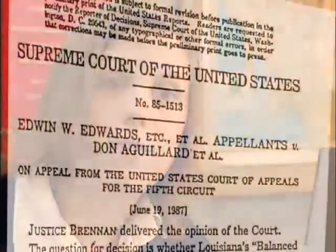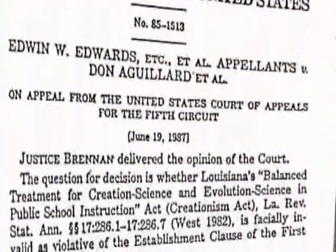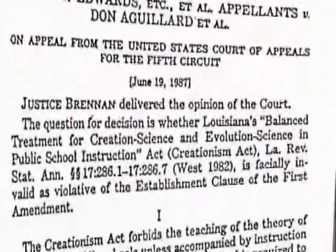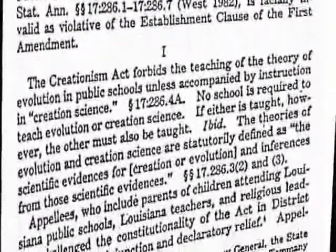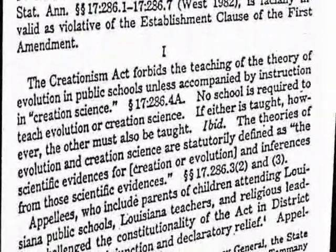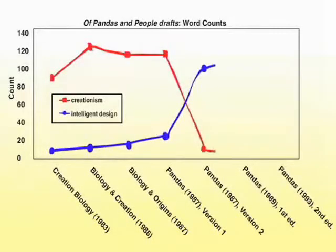The first draft was written prior to a 1987 Supreme Court decision declaring it unconstitutional for creationism to be taught in science classes. The second draft was written immediately after.